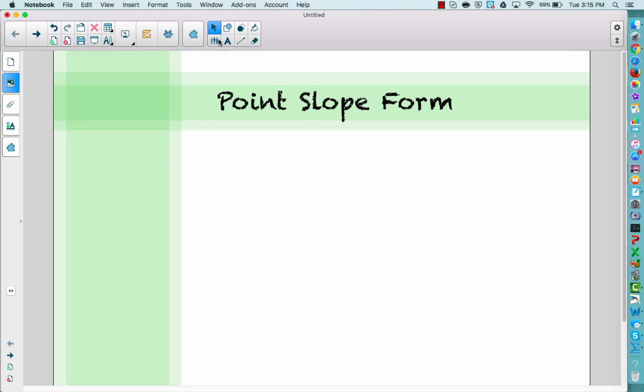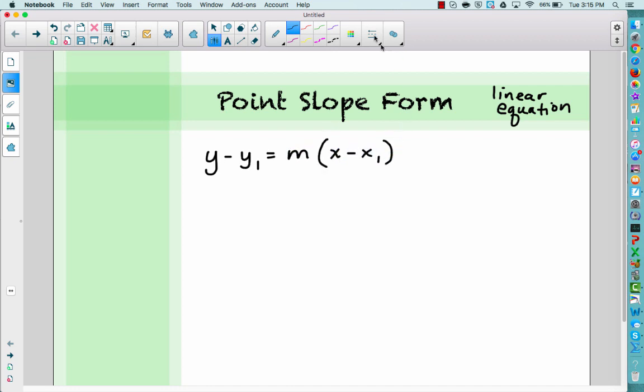So the point-slope form of the equation of a line—it's a line equation, a linear equation, or a linear function—would be y minus y₁ equals m, the slope, times x minus x₁. And x₁, y₁ just represents a point on the line.